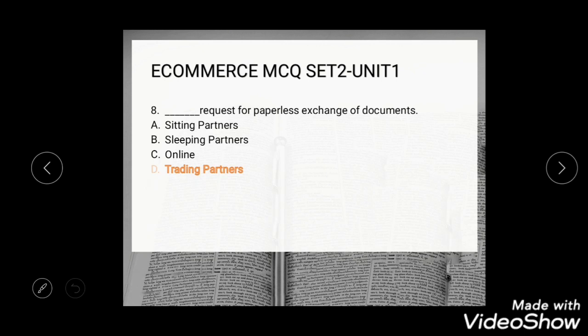Question 8: Dash request for paperless exchange of documents. Options are sitting partners, sleeping partners, online request, and trading partners. The correct answer is trading partners — trading partners request paperless exchange of documents.